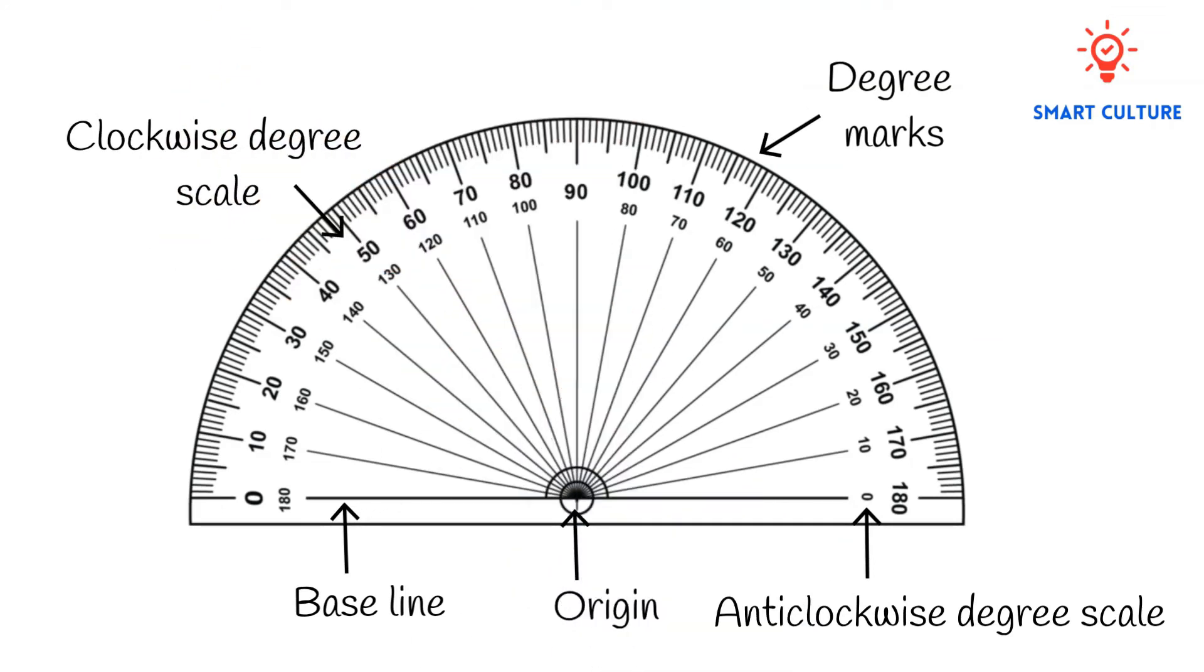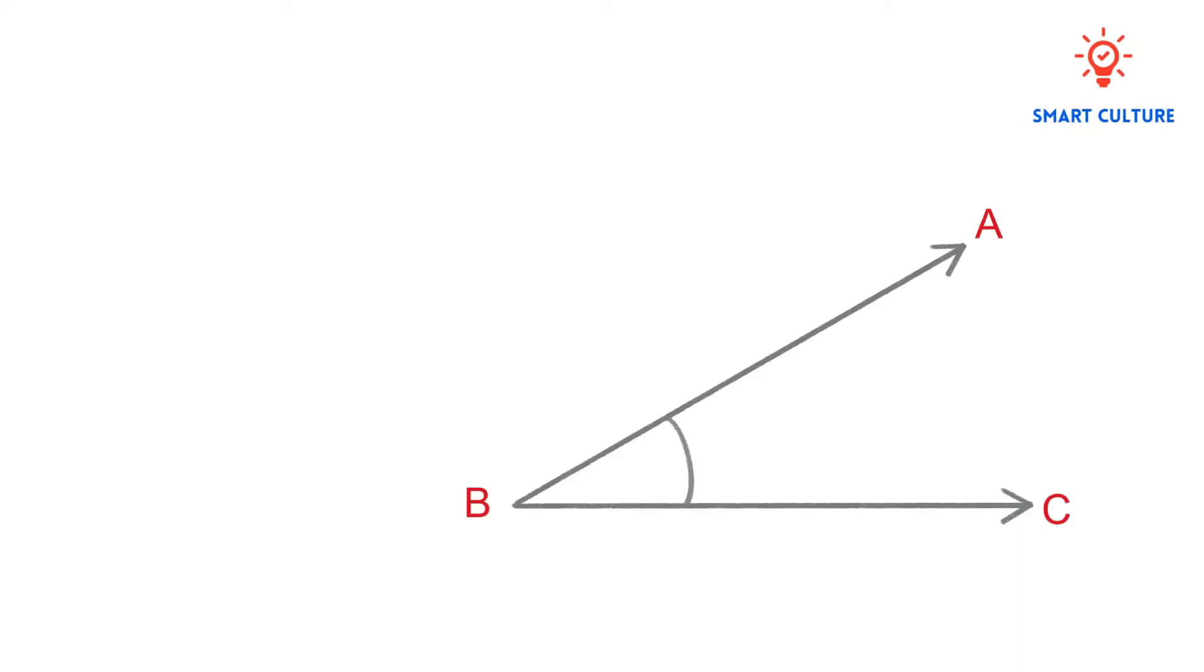Protractors can be big or small, but they all measure angles in exactly the same way. The size of the protractor makes no difference to an angle size. Let's take a look at this example question.